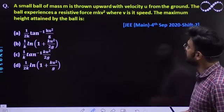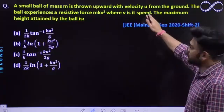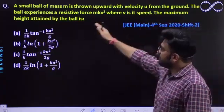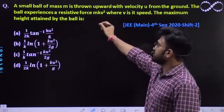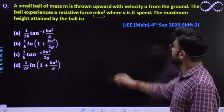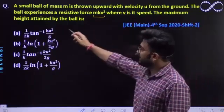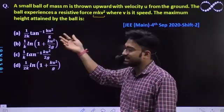Let's quickly see what the question is. A small ball of mass m is thrown upward with velocity u from the ground. The ball experiences a resistive force mkv² where v is the speed. The maximum height attained by the ball is?